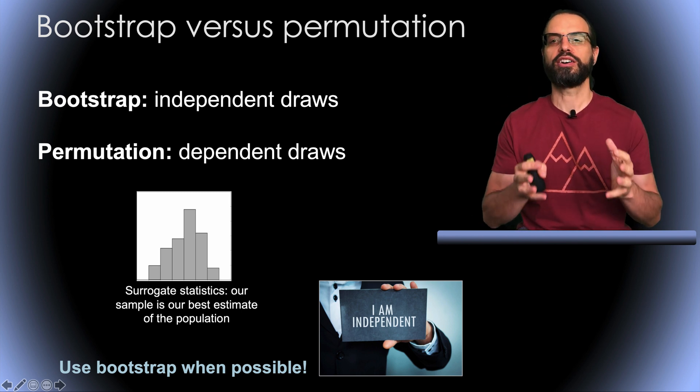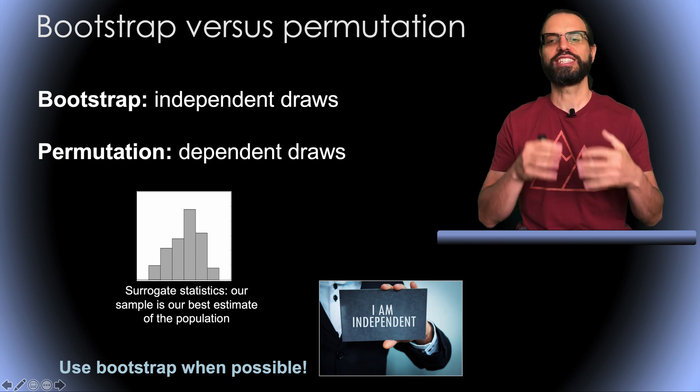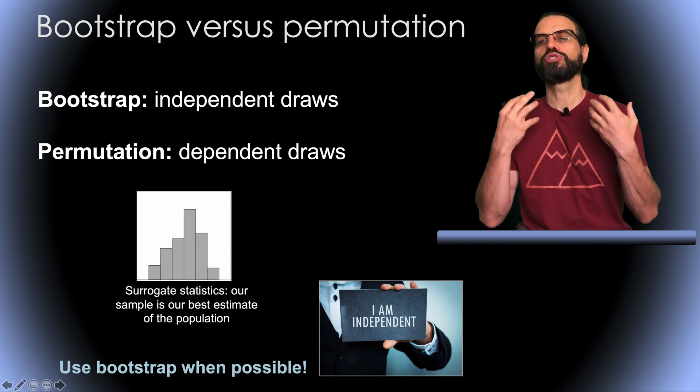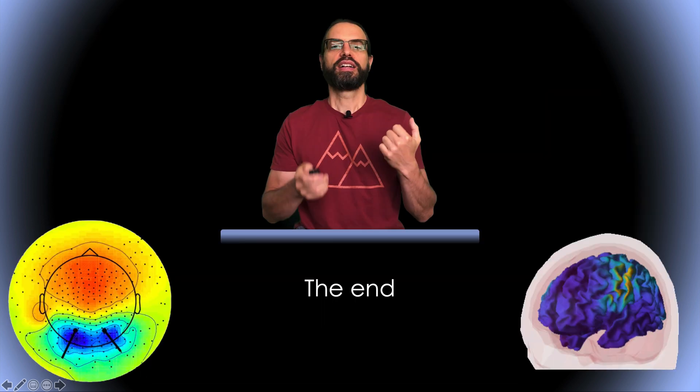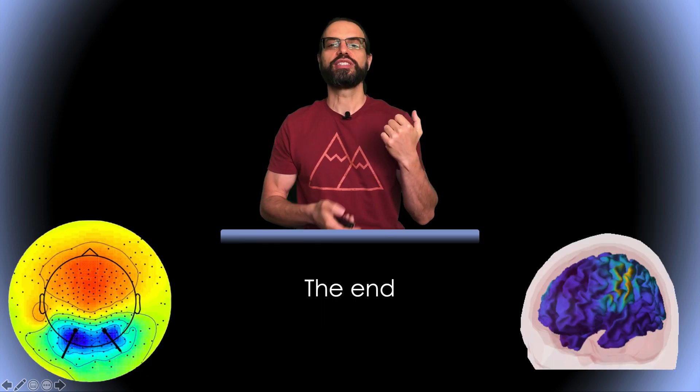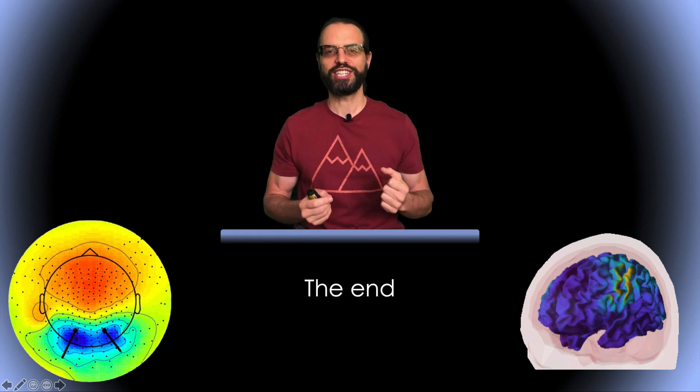And this is one of the reasons why bootstrap is more statistically sound than permutation. In practice, on actual data, we cannot really see the difference, so it's more of a theoretical preference for bootstrap than a numerical one. So this is the end of this presentation and I want to thank you for your attention and hope to see you in one of my future videos.